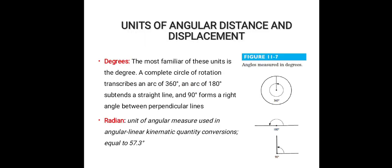The unit of angular distance and displacement is the degree. The most familiar unit is the degree: a complete circle is 360 degrees, a straight line subtends an arc of 180 degrees, and a right angle between perpendicular lines is 90 degrees.